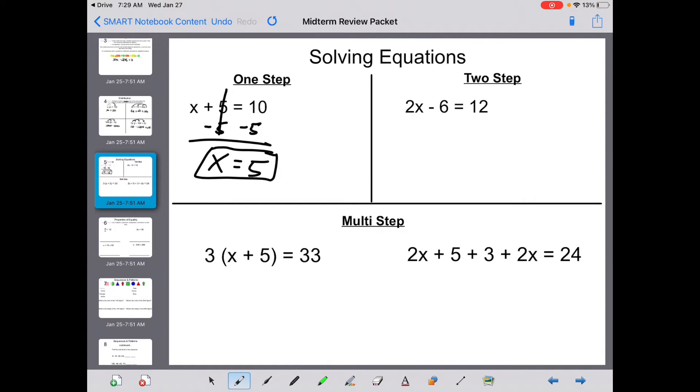Two-step, I need to get rid of my constant first. So we have a minus 6. I'm going to add it on both sides. And 2x equals 18. Now this is 2 times x, so I'm going to divide by 2. And x equals 9.